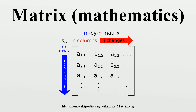If all entries of A below the main diagonal are 0, A is called an upper triangular matrix. Similarly, if all entries of A above the main diagonal are 0, A is called a lower triangular matrix. If all entries outside the main diagonal are 0, A is called a diagonal matrix.